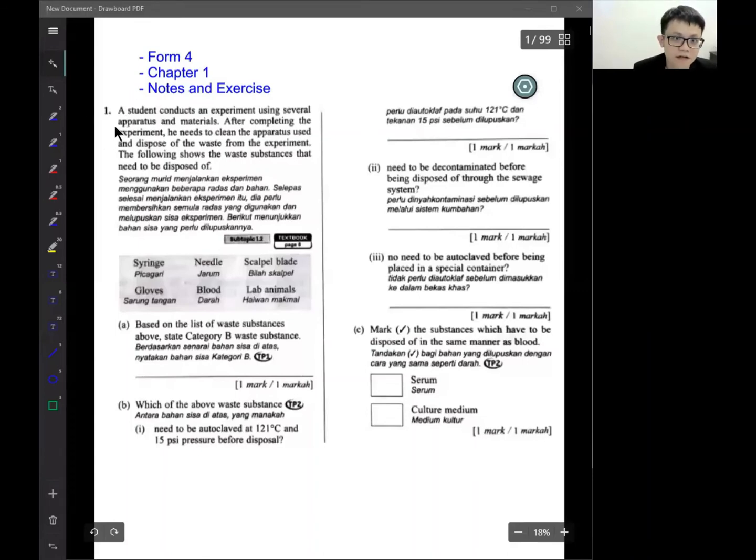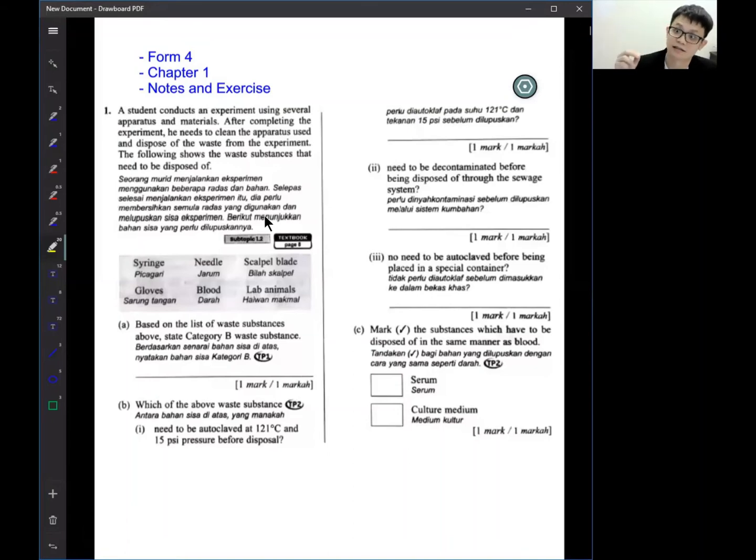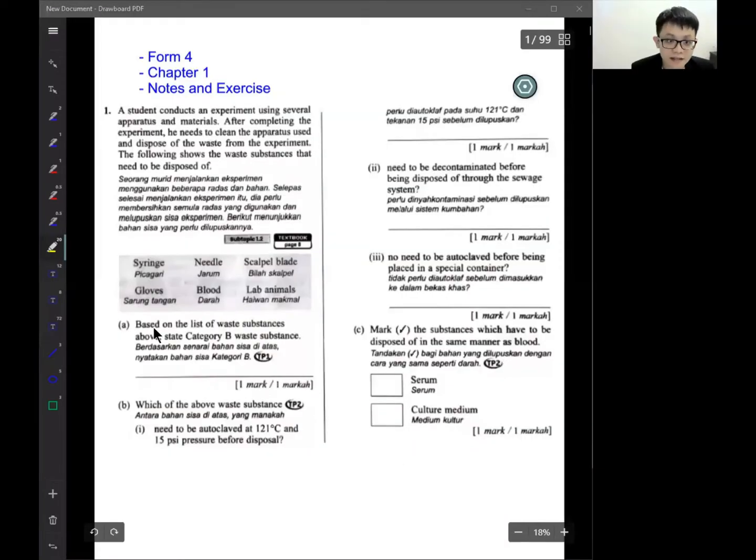Number one. For this question usually I would recommend students to highlight it because it's too long. Sometimes in science the answer is already in the question, students just do not understand the question. A student conducts an experiment using several apparatus and material. The following shows the waste substance that needs to be disposed of: syringe needle, scalpel, glove, blood, and lab animals. Based on the list of waste, state category B. The answer will be glove.